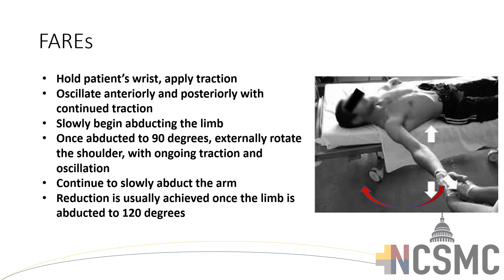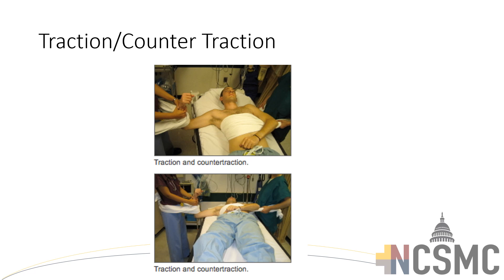The Farage technique is where you alternate and oscillate with continued traction as you abduct the arm to 90 degrees with some external rotation. You can see a theme with all these methods: they usually involve some kind of external rotation and abduction to mechanically get the humeral head to slip back into the glenoid fossa. Traction-countertraction is one of the oldest methods; however, it's really not useful unless you're doing it under sedation, because it's a fairly forceful method that can cause a lot of pain. But it's something to keep in your toolbox.